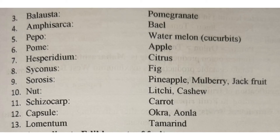Balusta is the fruit type for pomegranate. Amphicerca is for bael. Pepo is for watermelon and all cucurbits. Pome is for apple. Hesperidium is for citrus. Syconus is for fig. Sorosus is for pineapple, mulberry, and jackfruit.